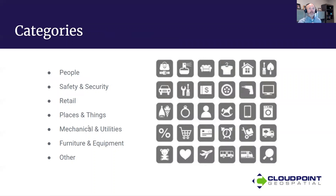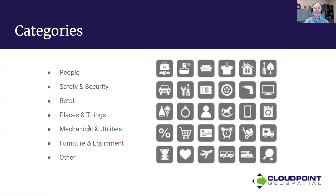Categories are very important — at the high level, where does a point of interest fall within these groups? The first four that come with the ArcGIS Indoors information model are: people, safety and security, retail, and places and things. I added mechanicals and utilities, knowing that for facility management we'll want something for mechanical systems like a sprinkler system or gas-related items, and communications — maybe mapping fiber optic lines and a patch panel for a fiber optic network.